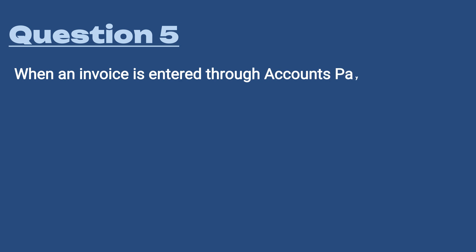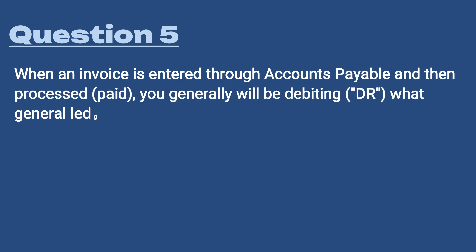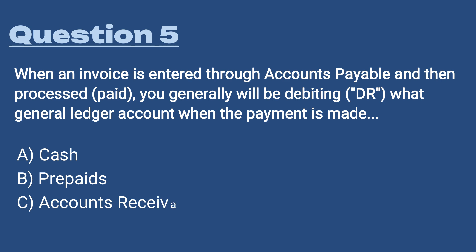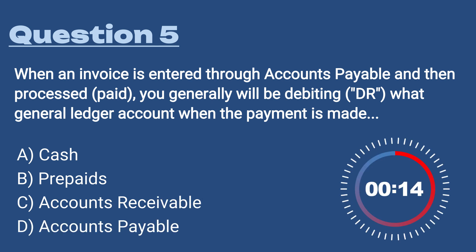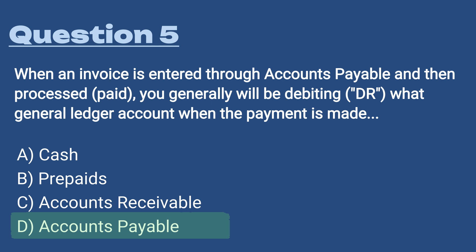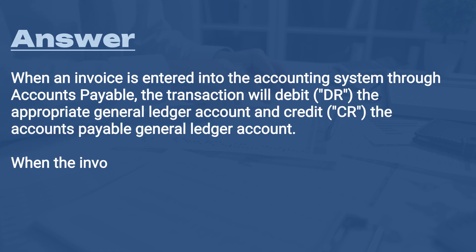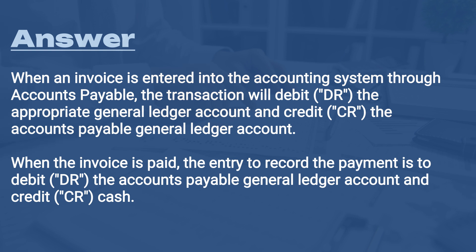Question 5: When an invoice is entered through accounts payable and then processed, which general ledger account do you generally debit when the payment is made? A) Cash, B) Prepaid, C) Accounts receivable, D) Accounts payable. The answer is D, accounts payable. When an invoice is entered into the accounting system, the transaction debits the appropriate GL account and credits accounts payable, putting the liability on the balance sheet. When the invoice is actually paid, you debit accounts payable and credit cash.